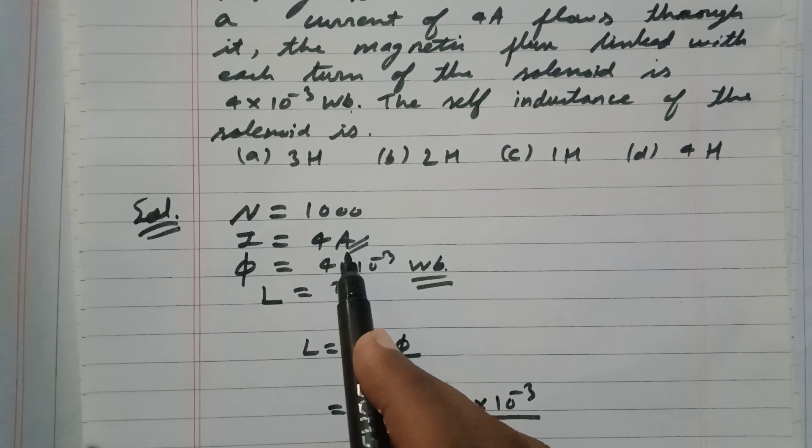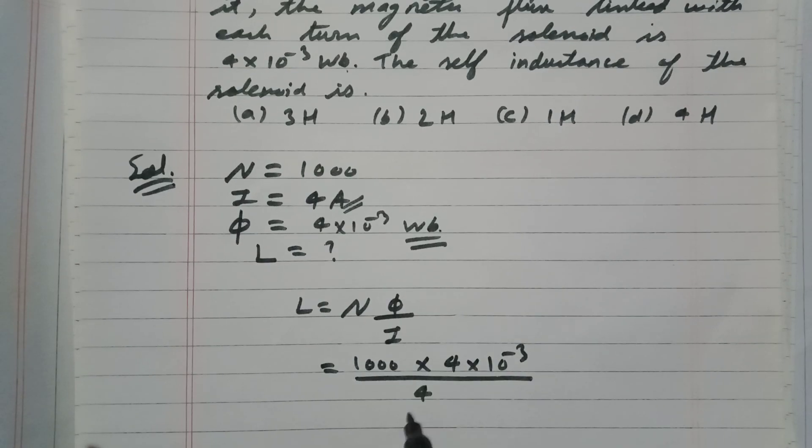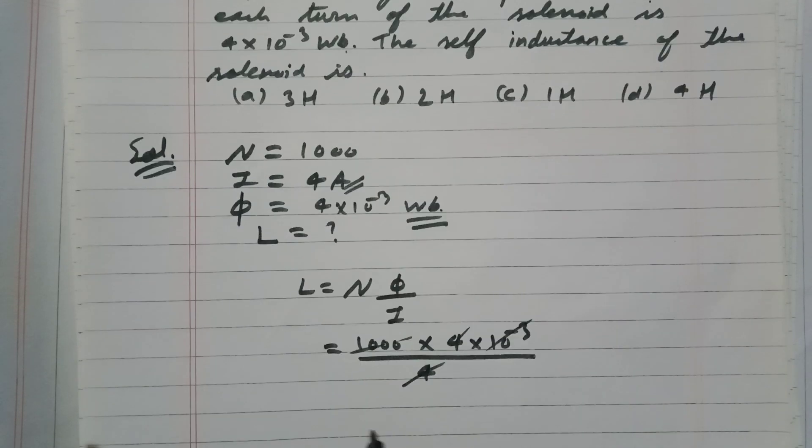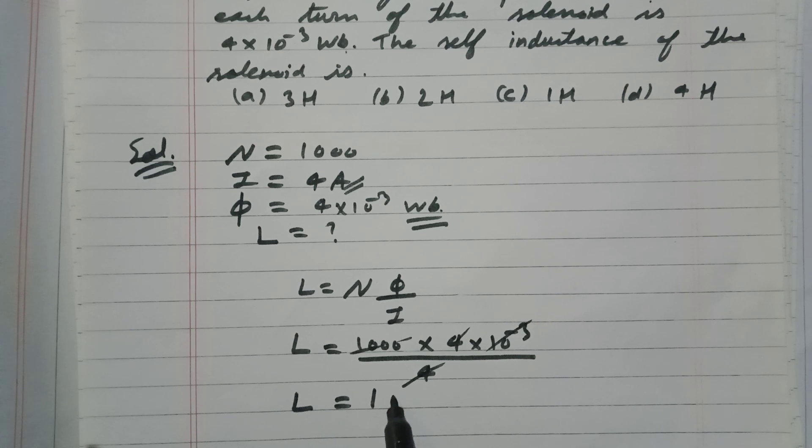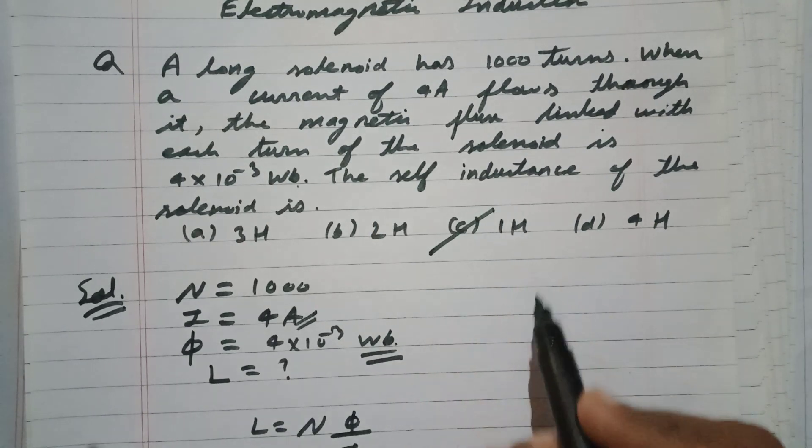No need to convert anything. On simplification, this 4 and this 4 cancel out, 10^-3 and thousand gets cancelled out, so your answer is going to be 1. The unit of self inductance is Henry, so your answer is 1 Henry. Your correct option is C. Okay, bye.